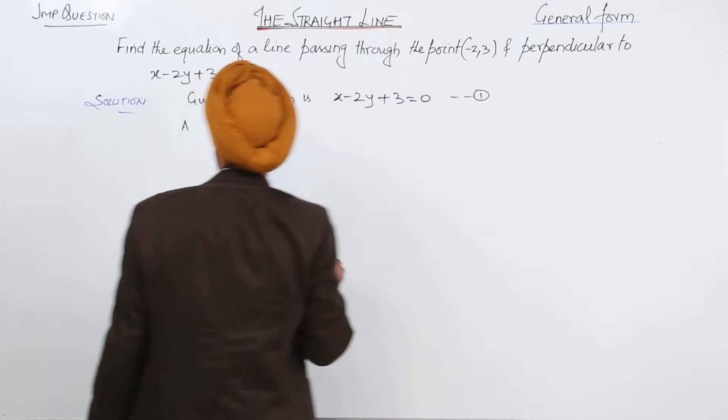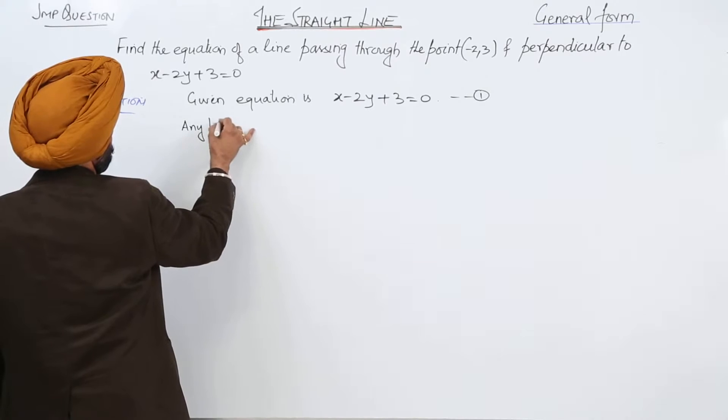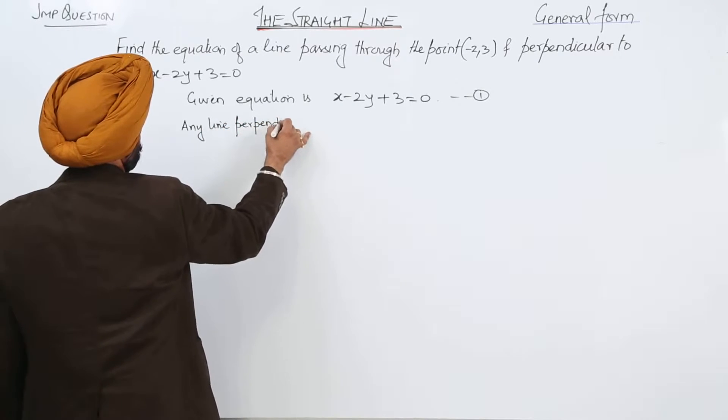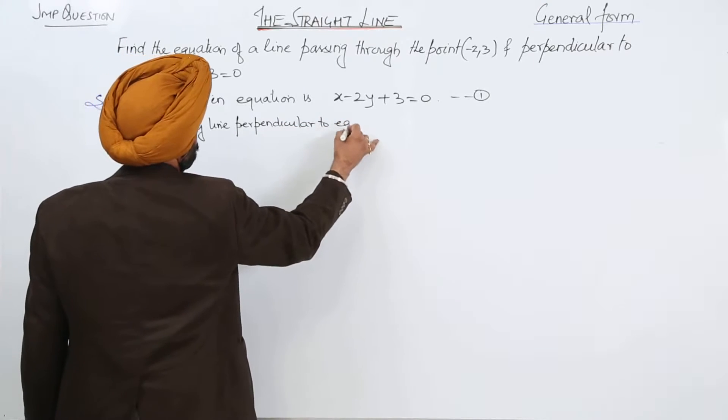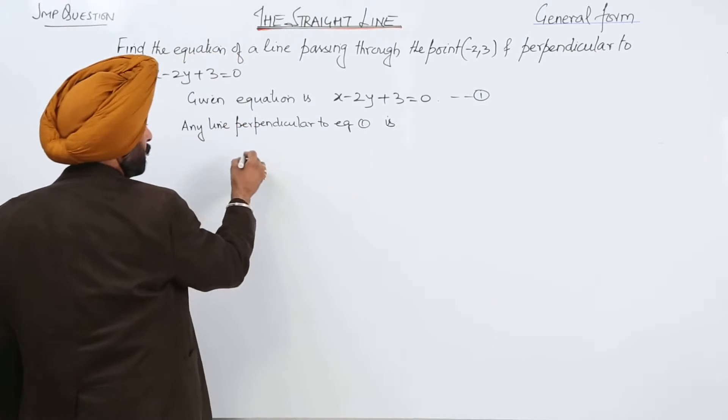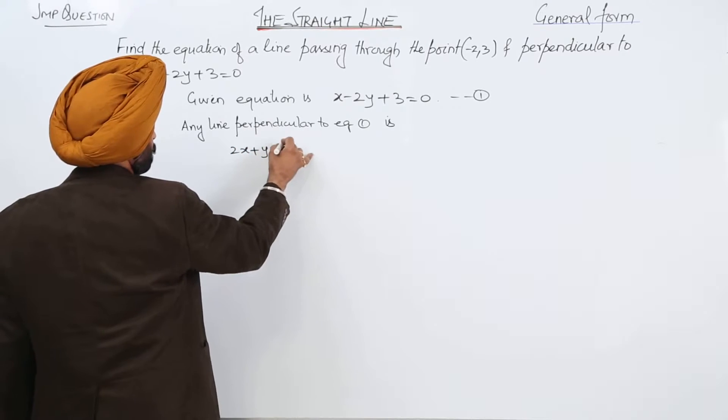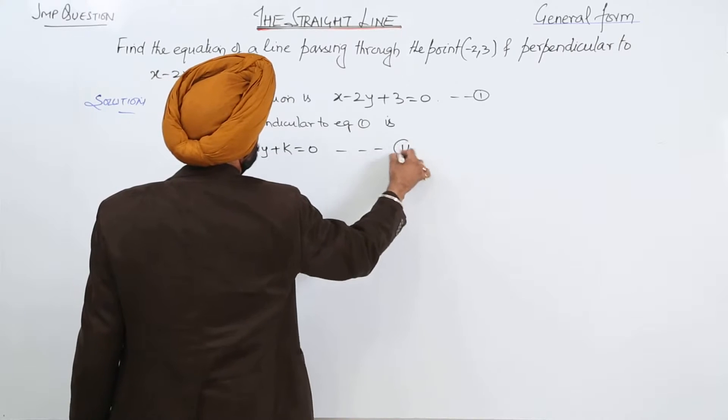Now, any line perpendicular to equation 1 is 2x plus y plus k is equal to 0.